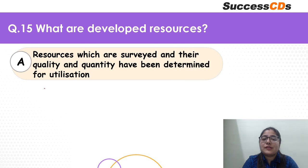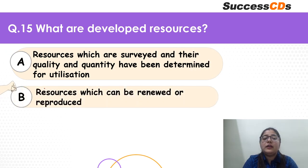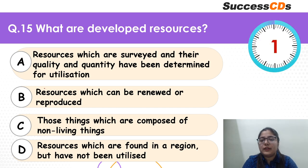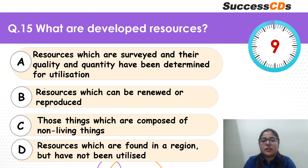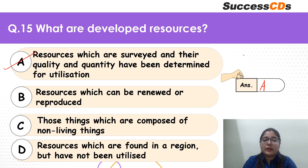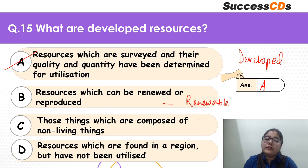Moving to question 15: what are developed resources? Resources that have been surveyed and their quality and quantity have been determined? Resources that can be renewed? Those composed of non-living things? Or found in a region not utilized? Very very easy question — the correct answer is A. We have surveyed and developed them, quantity and quality have been determined. Renewable is a different category, non-living is abiotic, and not-yet-utilized is potential.